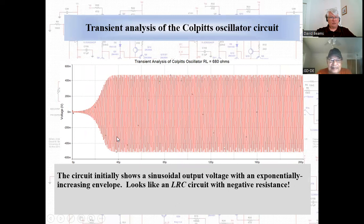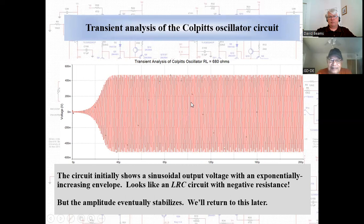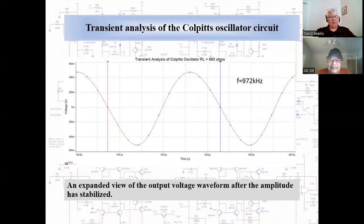With a load resistor of 680 ohms, the simulation produces an output voltage with an exponentially growing envelope — it looks like an LRC circuit with a negative resistance. Then the amplitude stabilizes. Honing in on part of the waveform, it's 972 kilohertz with the components in the simulation, and if you look at the waveform you can tell it's not quite a sinusoid — it's a little distorted.